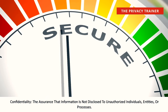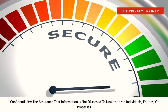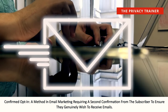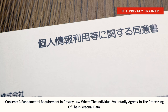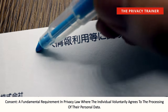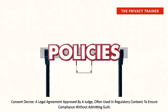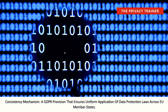Confidentiality. The assurance that information is not disclosed to unauthorized individuals, entities, or processors. Confirmed opt-in. A method in email marketing requiring a second confirmation from the subscriber to ensure they genuinely wish to receive emails. Consent. A fundamental requirement in privacy law where the individual voluntarily agrees to the processing of their personal data. Consent decree. A legal agreement approved by a judge, often used in regulatory contexts to ensure compliance without admitting guilt. Consistency mechanism. A GDPR provision that ensures uniform application of data protection laws across EU member states.